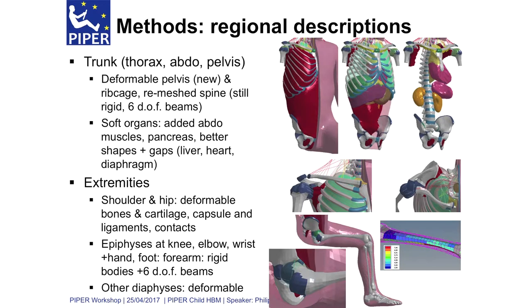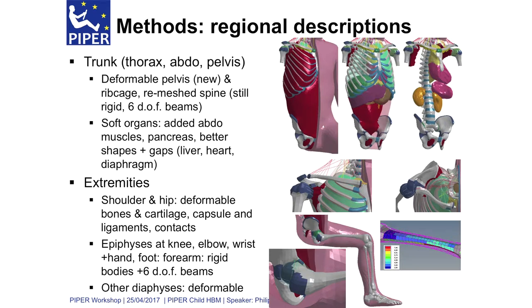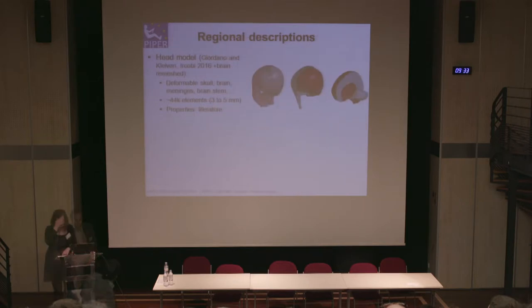In terms of components, for the trunk we have deformable parts — pretty much everything except the spine; the vertebrae are still rigid — with organs and so on. The extremities are deformable, with gross cartilage on the joints shown in blue, articulated with contacts. Shoulder and hip were an important update, especially for side impact.